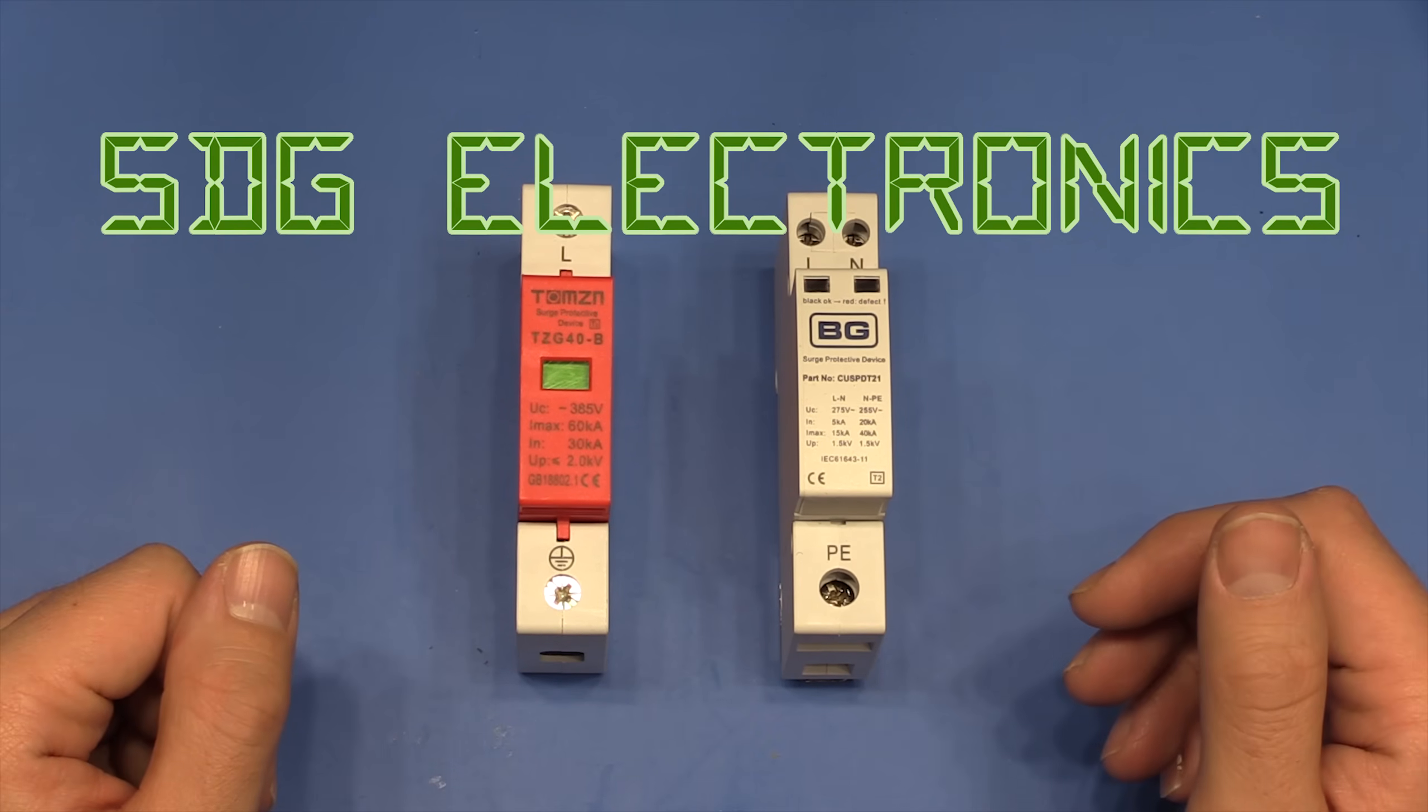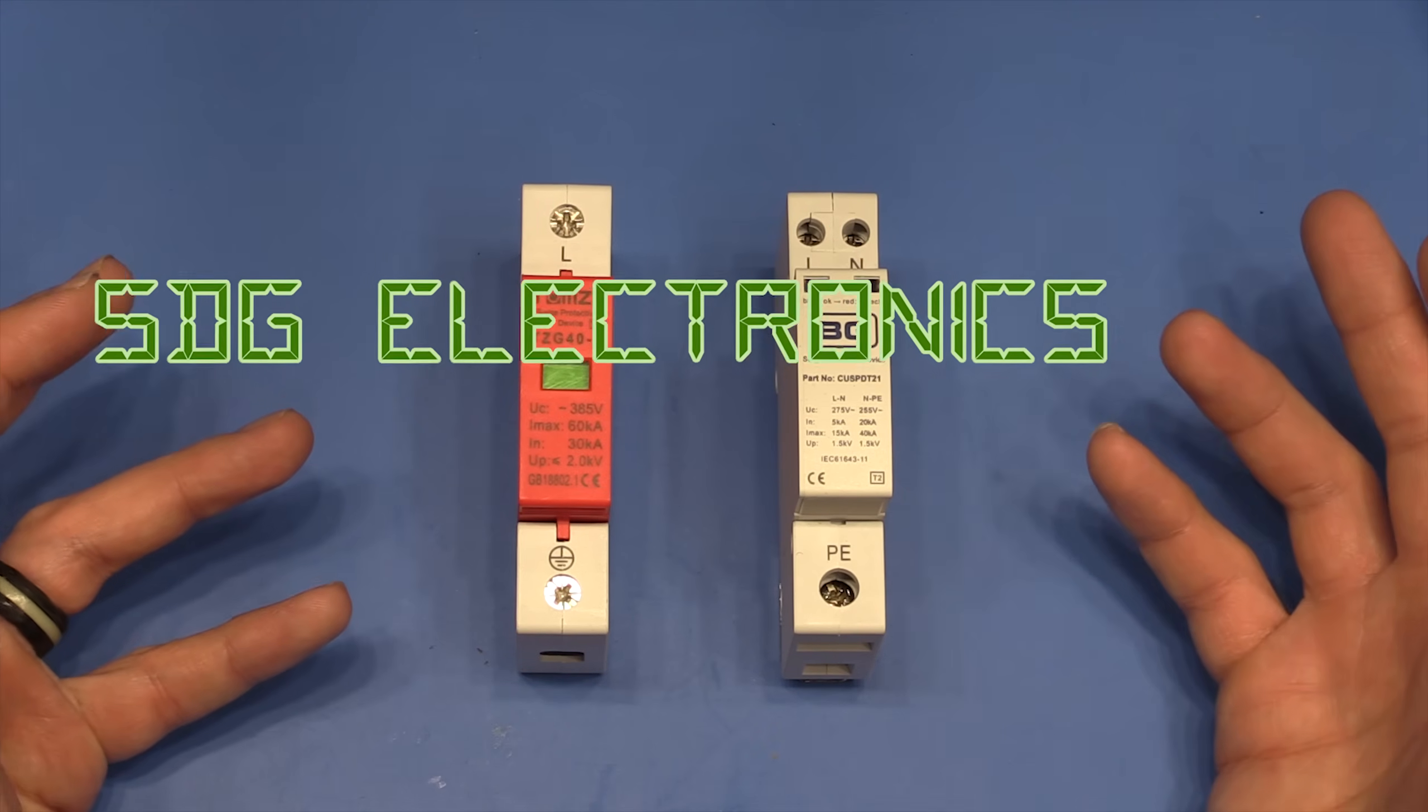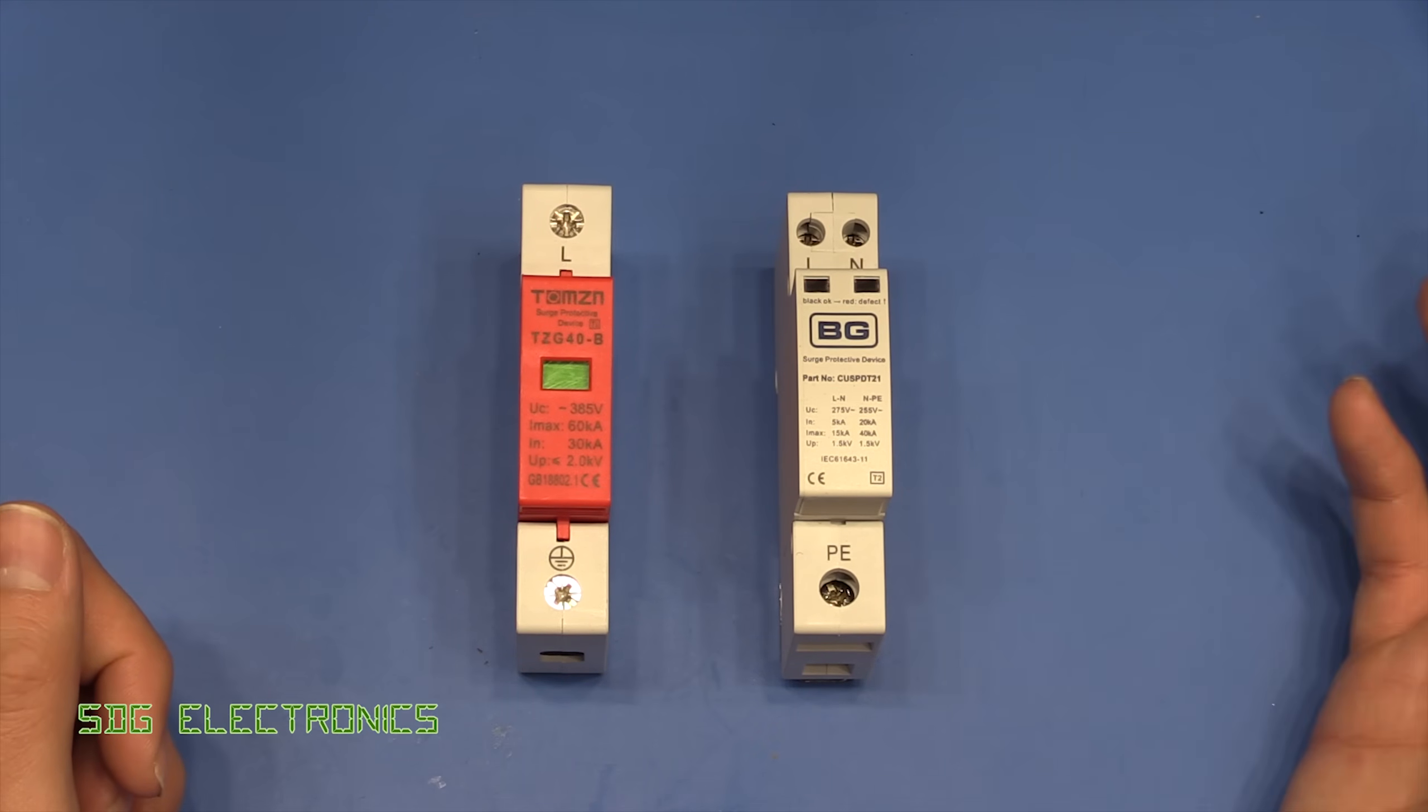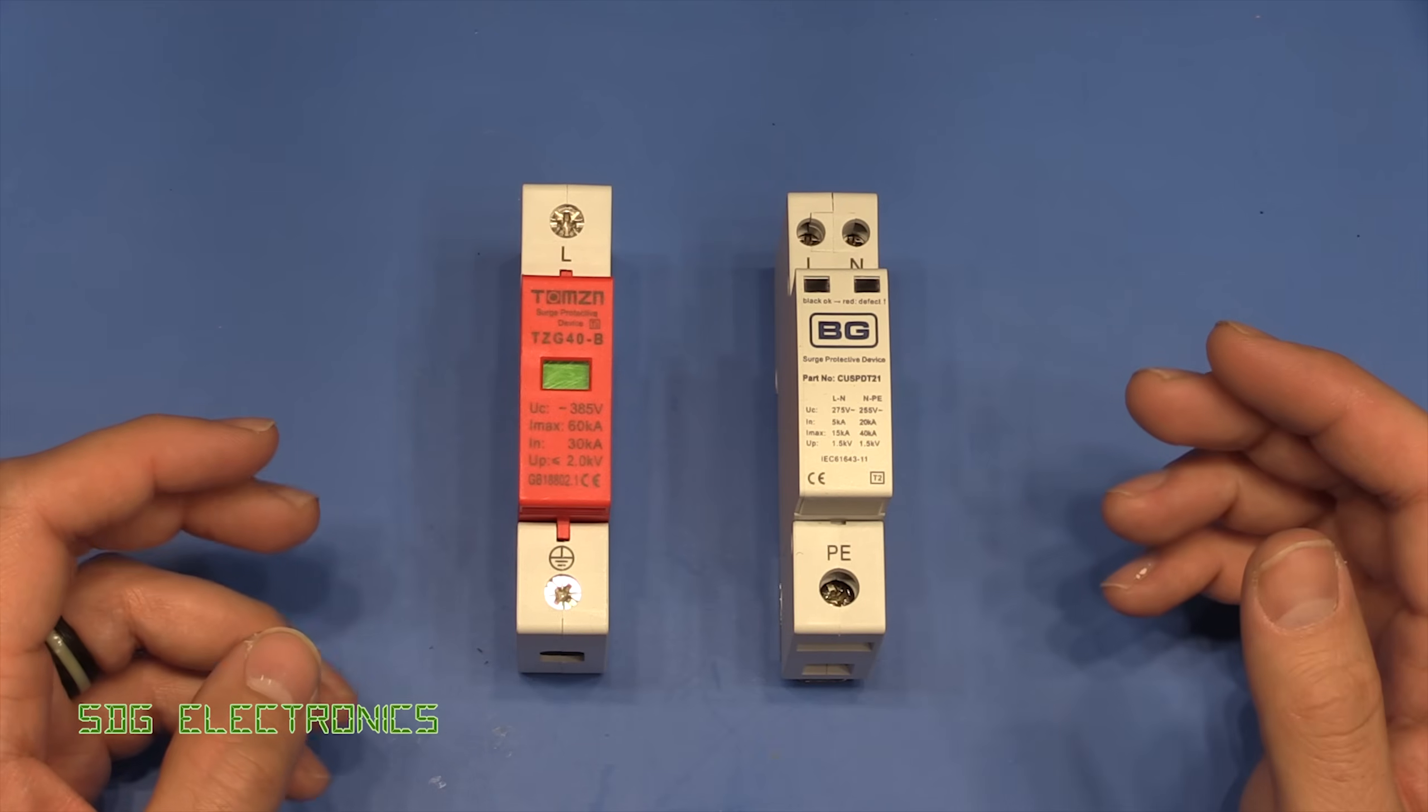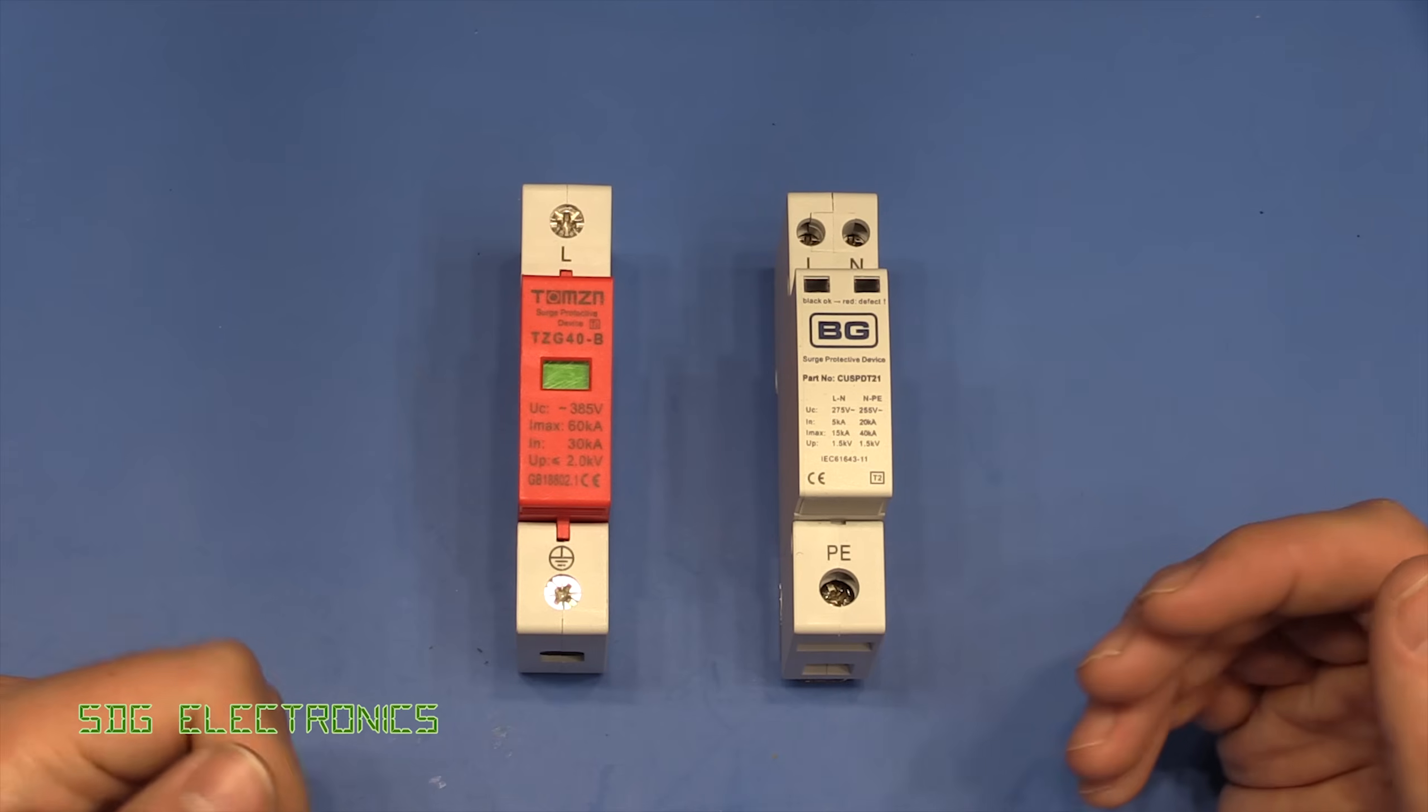Hi, so this video is going to be about surge protection devices. Now surge protection devices are not new and they have been used on the continent and particularly in Australia for quite a long time, but the 18th edition of BS 7671 has introduced the thought of using these in consumer units for domestic applications.